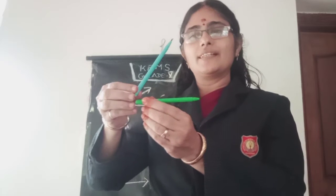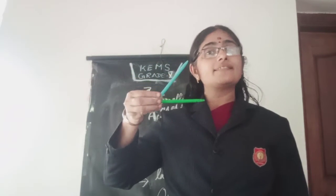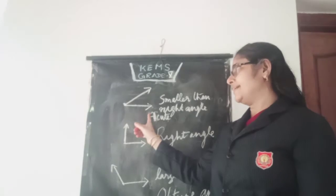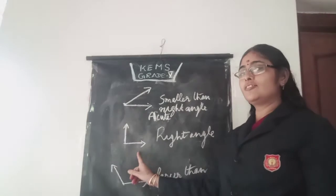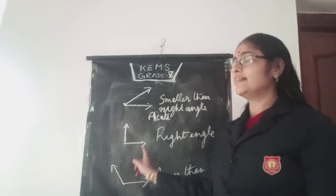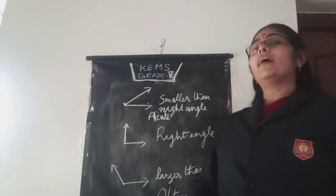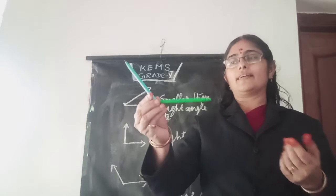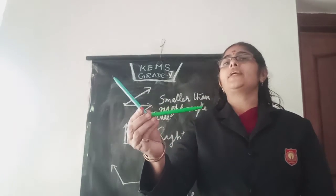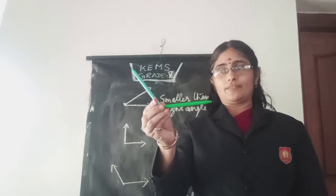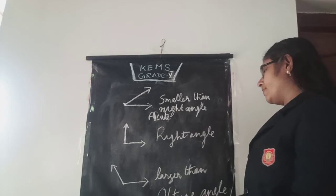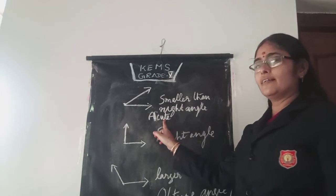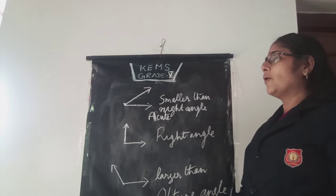Less than 90 degrees — this shape is less than 90 degrees. This is a smaller angle. This is a right angle — the 90 degree angle. This is a larger angle — if it is more than 90 degrees, it is greater than the right angle. The three names are: acute angle, right angle, and obtuse angle.